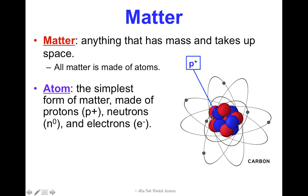Structurally in an atom, there's a dense center called the nucleus and that's where the positive protons and the neutral neutrons are. They are held very tightly together and there's a lot of energy there, making it very hard to pull them apart. Surrounding the positively charged nucleus are the negative electrons on the outside, traveling around the nucleus, and they're much easier to move because they're not held so tightly together.